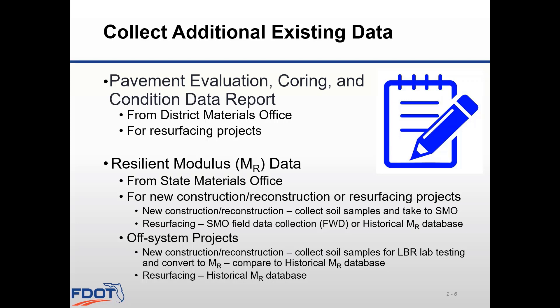For resurfacing projects, you'll need to coordinate with the State Materials Office to schedule field data collection. The SMO staff will go out and collect deflection data using their Falling Weight Deflectometer, or FWD. Where it's not feasible to collect FWD data, another tool may be used — the FWD Dashboard — which is a database of historic FWD data collected statewide. You should be able to find nearby FWD data usable for your project. In general, use historical data collected within the most recent five-year period, and engineering judgment must always be exercised with this method.